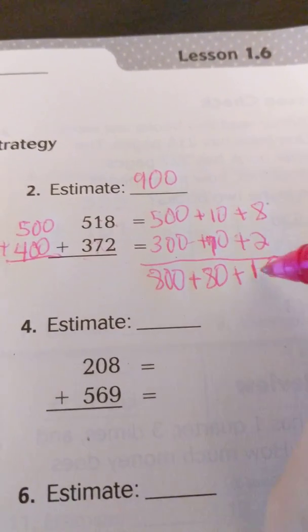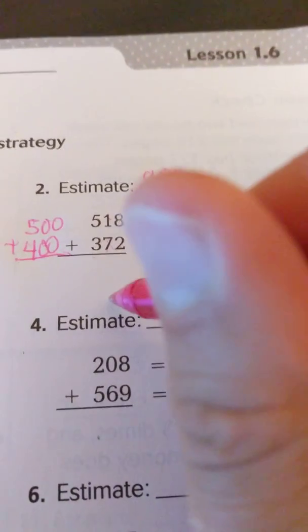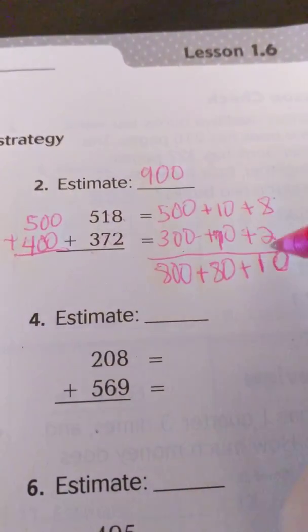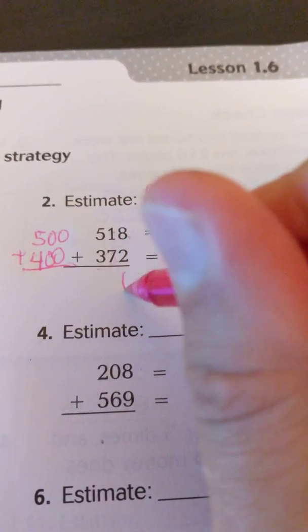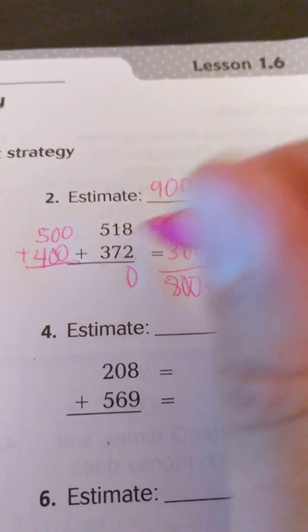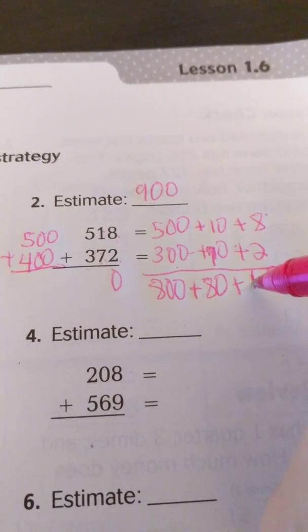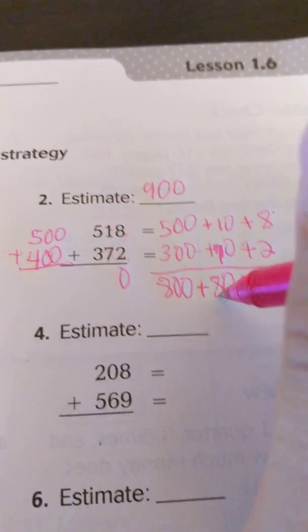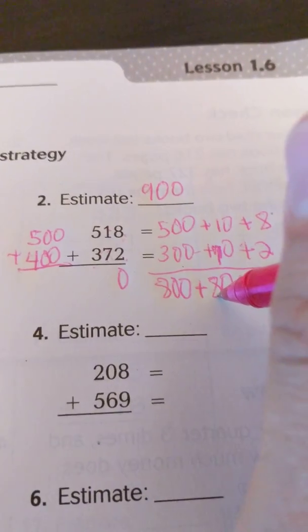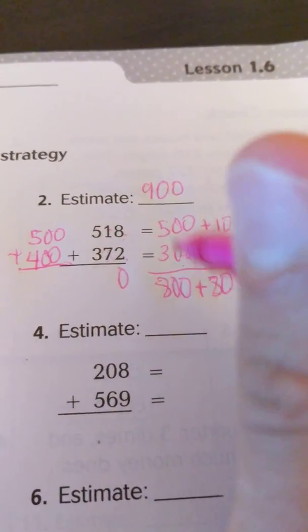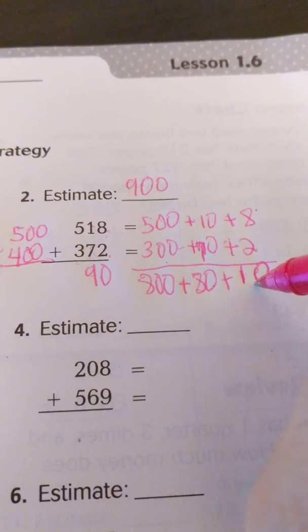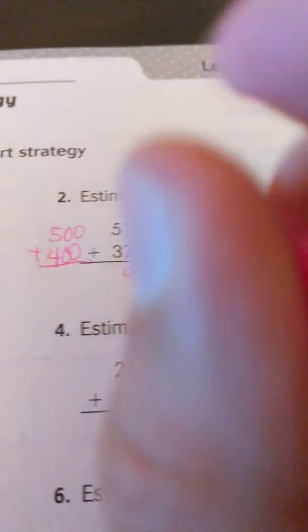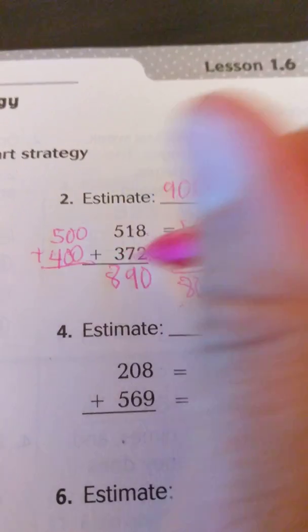So now we're going to go ahead and add going across. Remember, start with your ones. Don't start with the hundreds. Don't start with the tens. Start with the ones. So I have 0, 0 ones. 8 plus 2 is 10, so that makes sense. Now look at my tens. 1 ten plus 8 tens is 9 tens. And then we have 0 tens, so that's still 9 tens. And then I have no hundreds, no hundreds, and there's 800. So my answer, just like if I do it vertically,